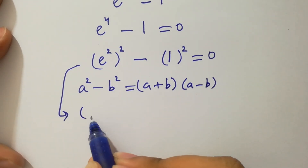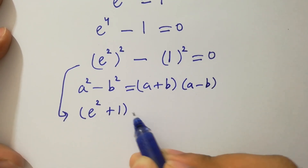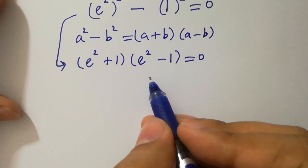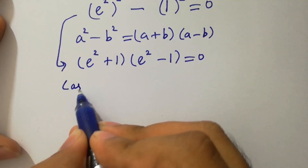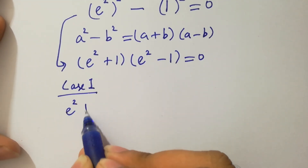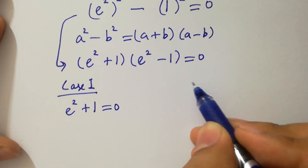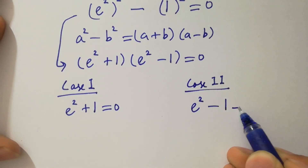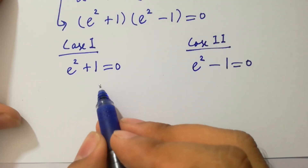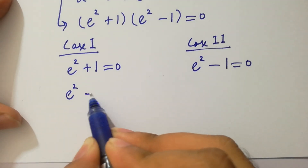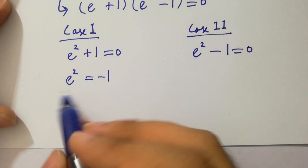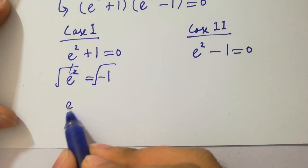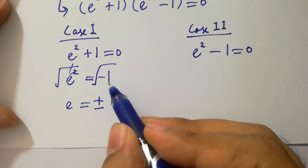This gives us (e squared plus 1)(e squared minus 1) equals 0, giving two cases. Case 1: e squared plus 1 equals 0, so e squared equals minus 1. Taking the square root on both sides, e equals plus or minus i, since the square root of minus 1 is i.